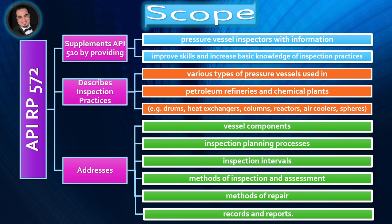API RP 572 describes inspection practices for the various types of pressure vessels used in petroleum refineries and chemical plants — for example, drums, heat exchangers, columns, reactors, air coolers, and spheres. It addresses vessel components, inspection planning processes, inspection intervals, methods of inspection and assessment, methods of repair, and records and reports.